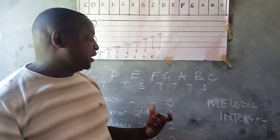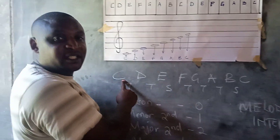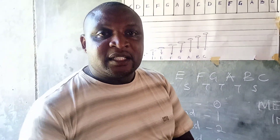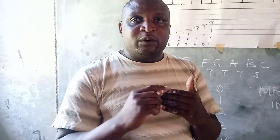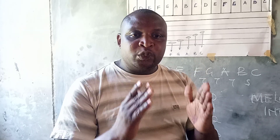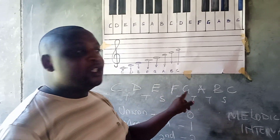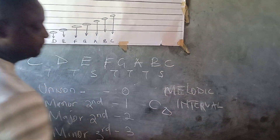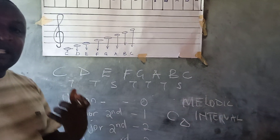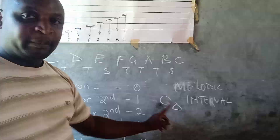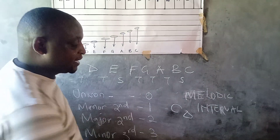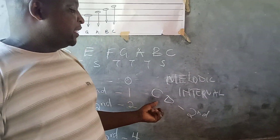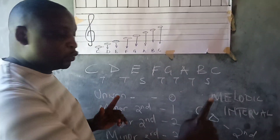So that when we want to teach them about interval, they already know that between the first and second note there is a tone. If you are teaching them the interval between E and F, they already know there is a semitone. When teaching melodic intervals, we use semitones to calculate the distance between notes. For example, if you want to teach learners the interval between C and D — first, you teach them that between C and D there are two alphabetical letters and no letter in between, so we call it a second.